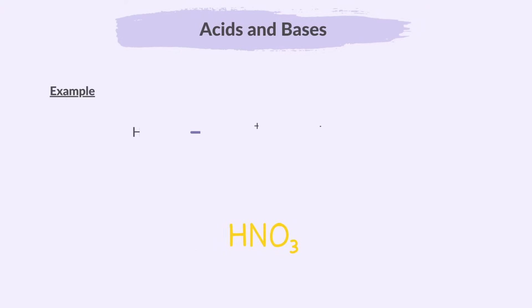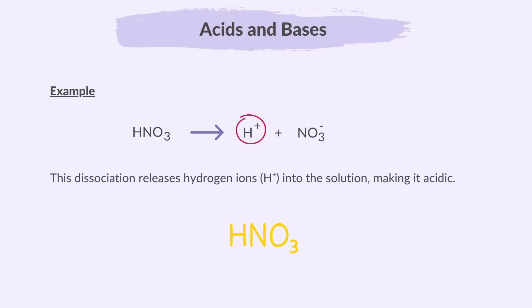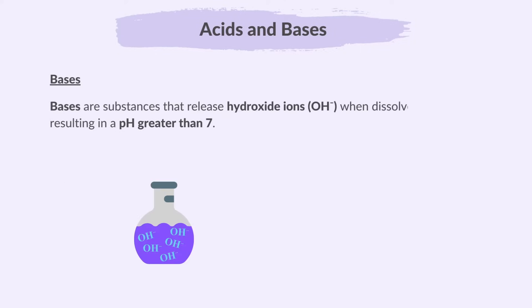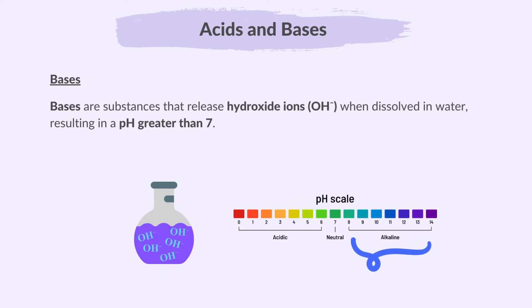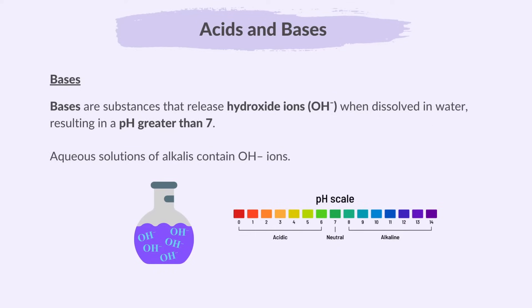For example, nitric acid in aqueous solution dissociates into hydrogen ions and nitrate ions. This dissociation releases hydrogen ions into the solution, making it acidic. Bases are substances that release hydroxide ions when dissolved in water, resulting in a pH greater than 7. So aqueous solutions of acids contain H⁺ ions, and aqueous solutions of alkalis contain hydroxide ions.